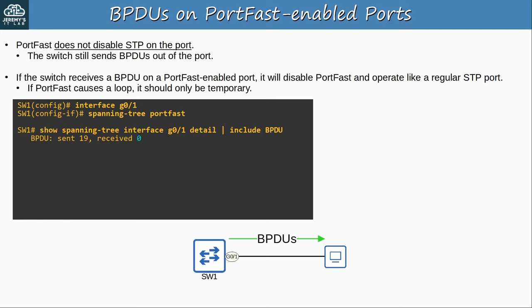Here's what we covered in this video. We covered three optional features from the STP toolkit. First was PortFast, which you should enable on all ports connected to non-switch devices. Then BPDU Guard, which you should enable on PortFast-enabled ports to protect against switches being connected to those ports. And finally BPDU Filter, which stops ports from sending BPDUs and also from receiving them, although there is a difference in behavior if you enable it globally or per port.